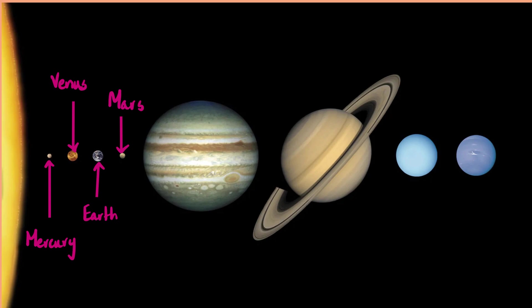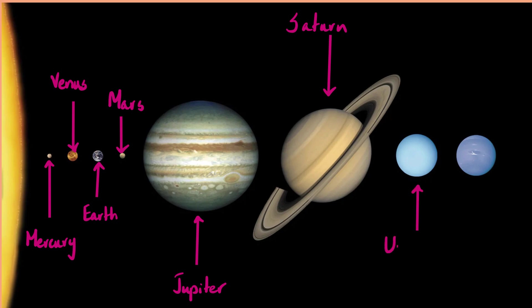Then the very large planets begin. To maintain consistency, keeping them in order: this is Jupiter, then Saturn, then Uranus, and the last one is Neptune.